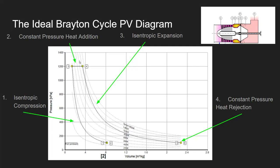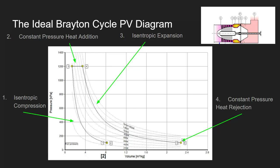Once we reach point four, we've added all the energy we're going to add, and we're ready to extract work using our turbine. Similar to the compression process, this expansion happens isentropically. We expand the gas back down to the original system pressure — the same as at points one and two — but at a slightly higher temperature. We then reject that heat into the atmosphere by venting those gases out of our system.